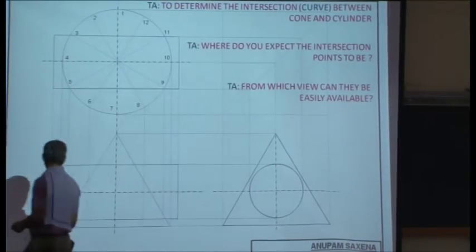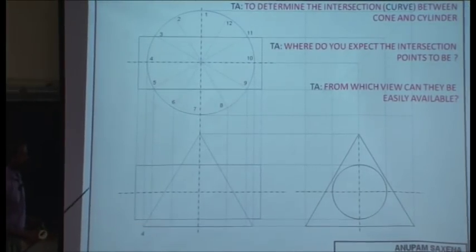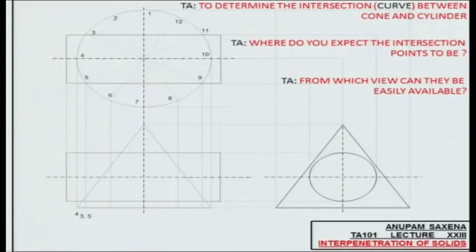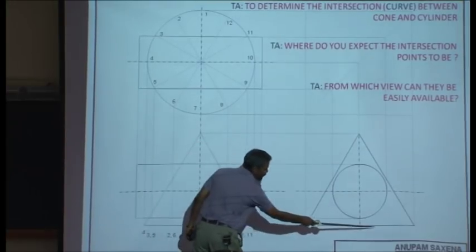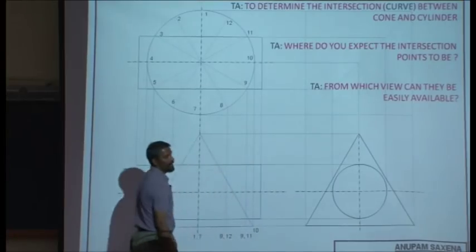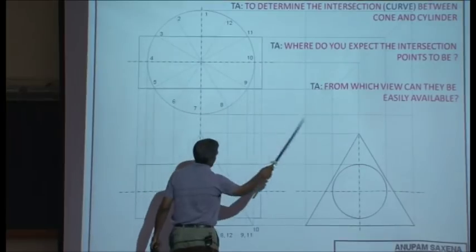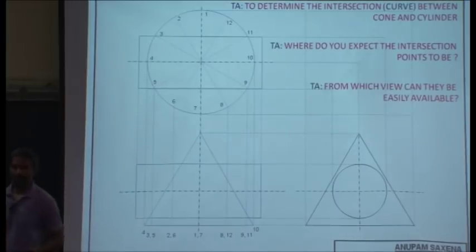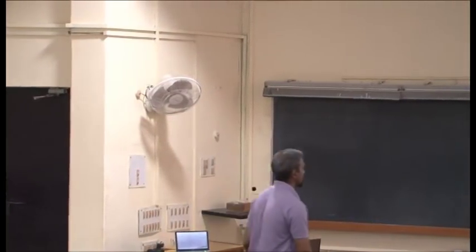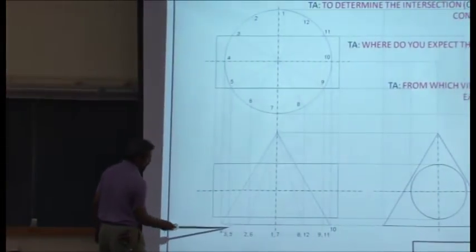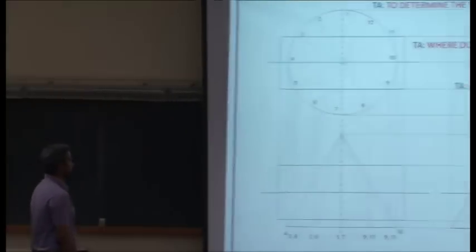Label the points on the base of the cone in the front view: points 1 and 7 coincide, 2 and 6, 8 and 12, 9 and 11, and 10. Then do the same exercise for the profile view using the 45-degree line to transfer projections. The numbering will change in the profile view, of course. Once done, join the apex of the cone to all the points on the base — these lines are the generators.